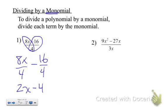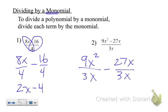Number 2, 3x goes into 9x squared and 27x. And you're left with 3x and 9.